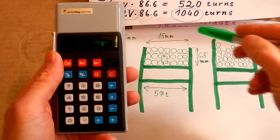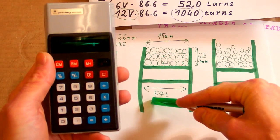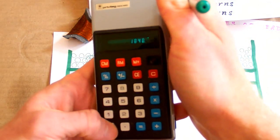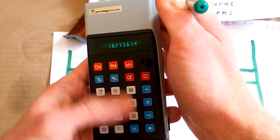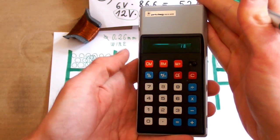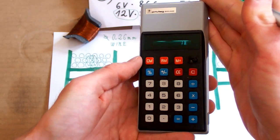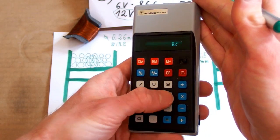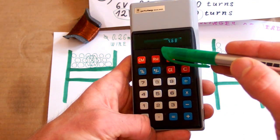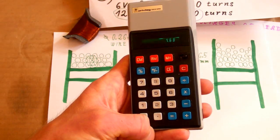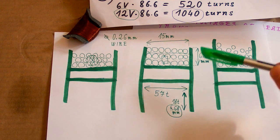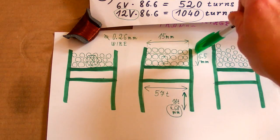There's 1040 turns in total and 57 turns in each layer, so how many layers? 1040 divided by 57 is about 18 layers. So there's 18 layers times the wire diameter which is 0.26, so the winding is going to be about 4.6 millimeters tall. The space on the spool is 6.5 millimeters, so it should fit.